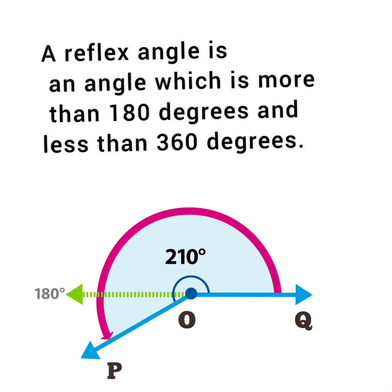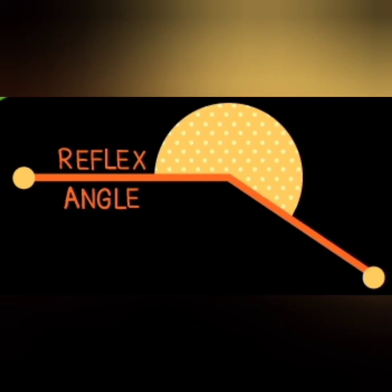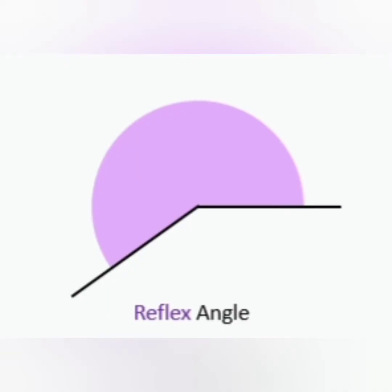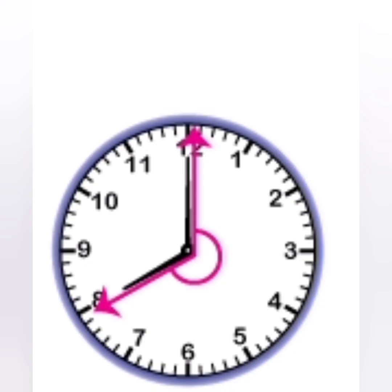An angle which is more than 180 degrees and lesser than 360 degrees are called a reflex angle. Example of a reflex angle.